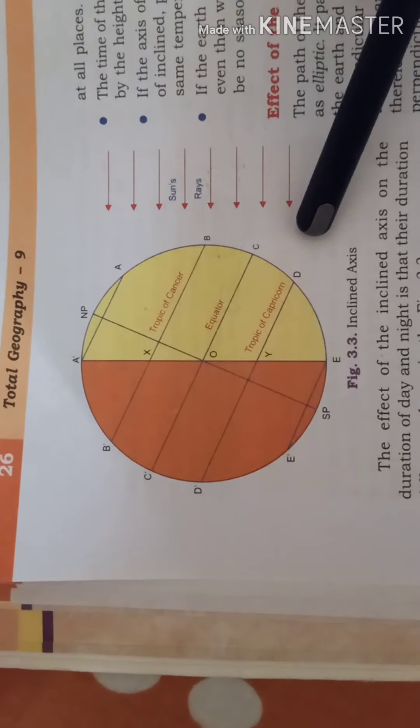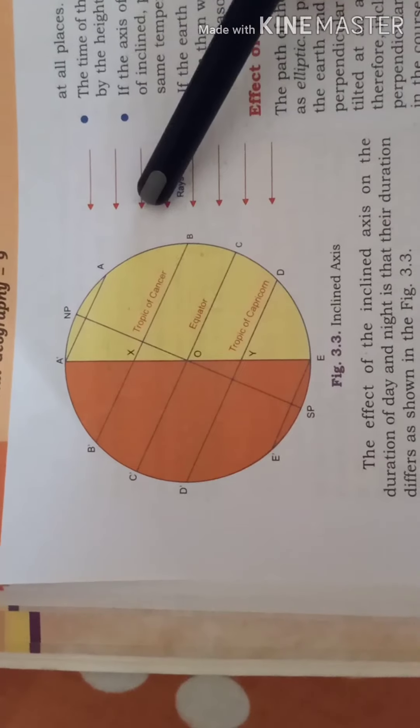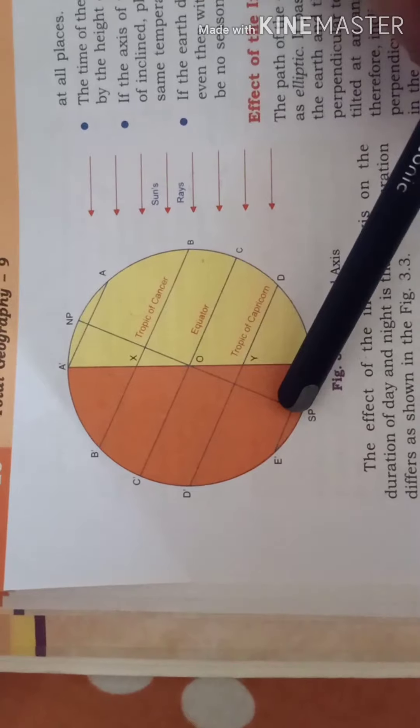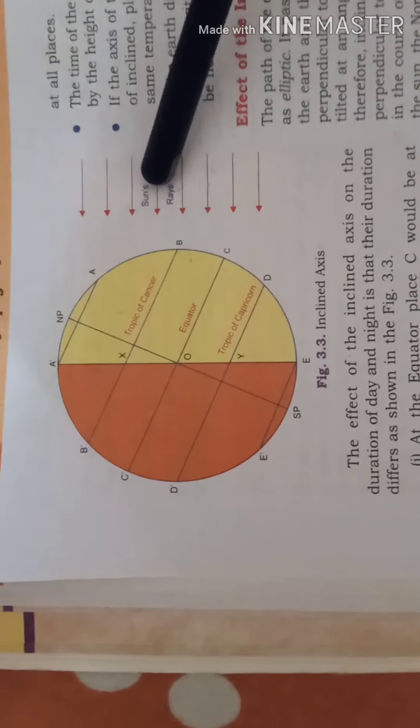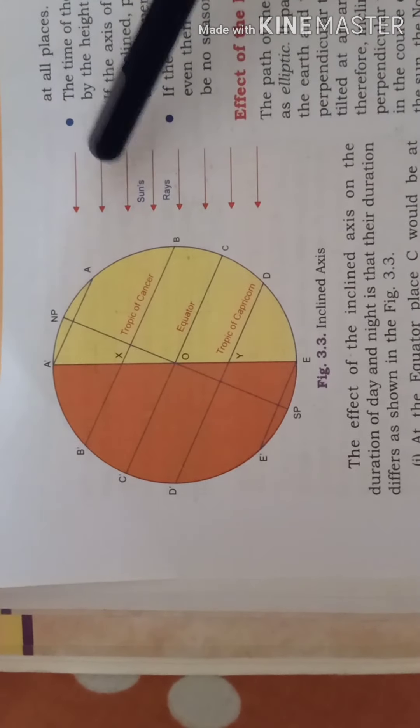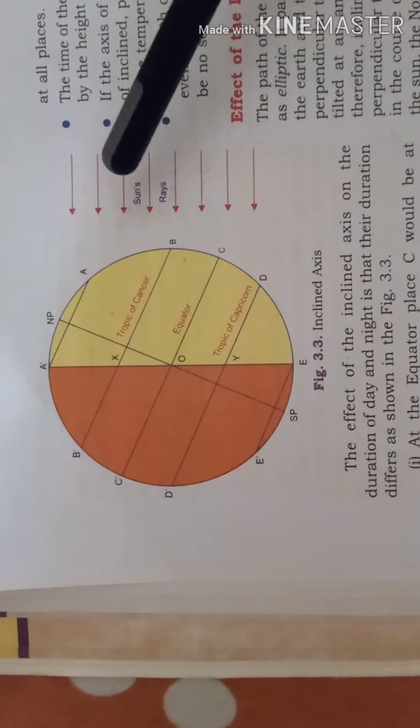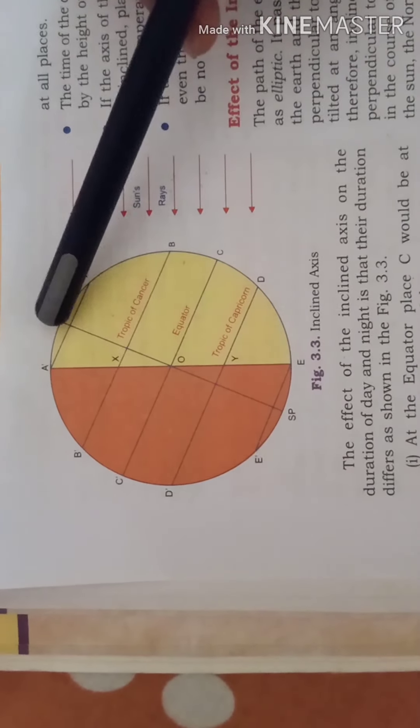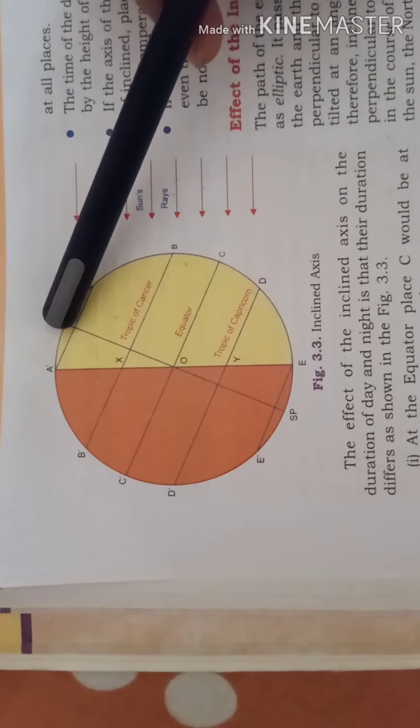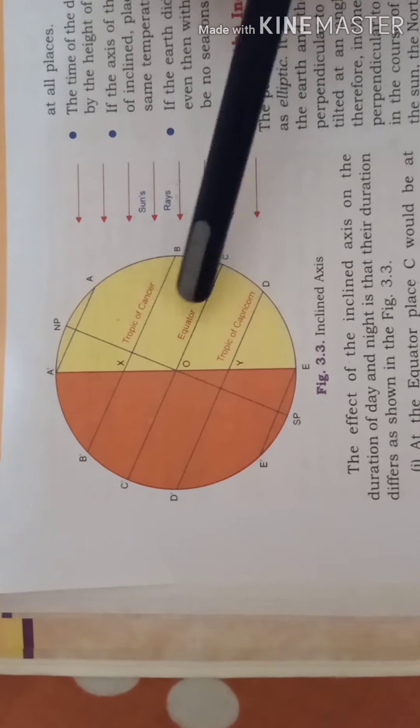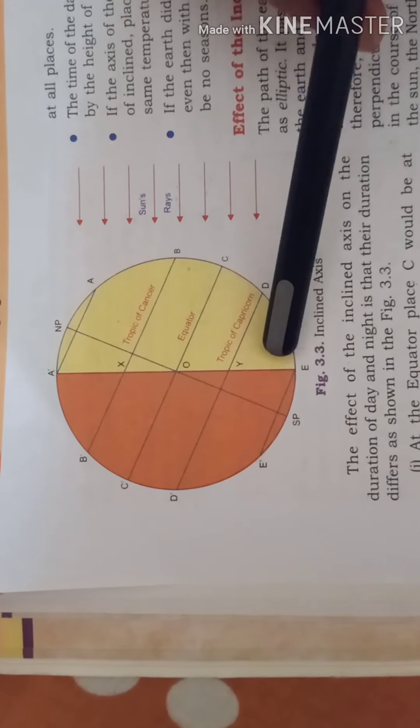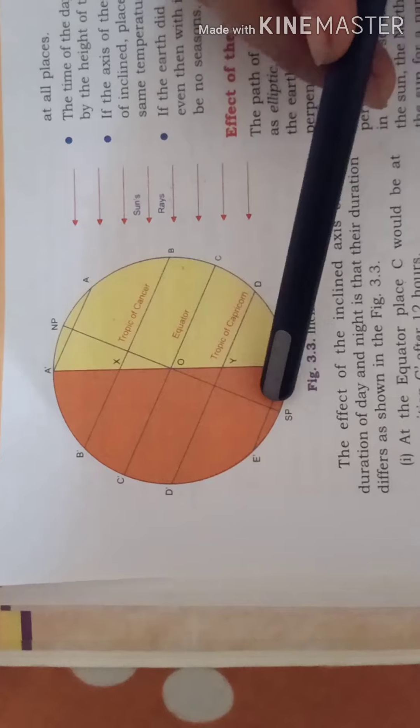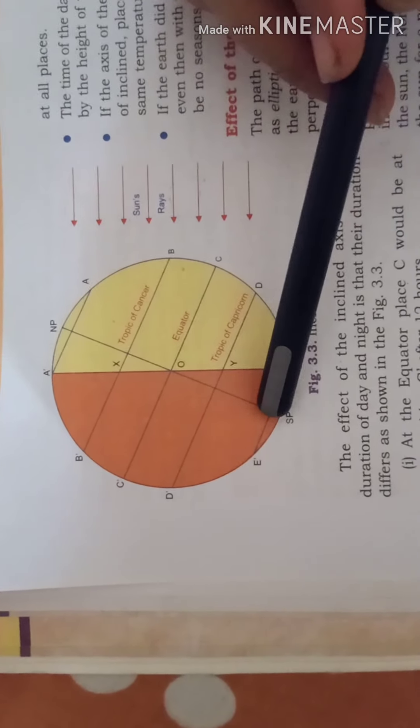In this position if you see the northern hemisphere is tilted towards the sun as you can see this part. And the southern hemisphere is tilted away from the sun. Over here in this diagram to make things very clear you will see that as we move from the equator towards the poles the length of the day goes on increasing. And as we move from the equator towards the south pole you will see that beyond the Antarctic circle this particular area is in total darkness.